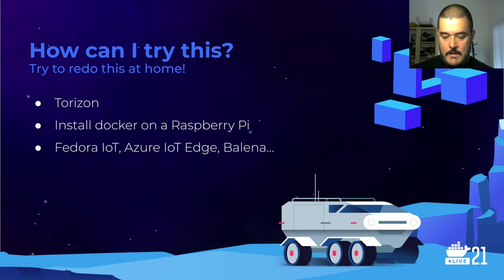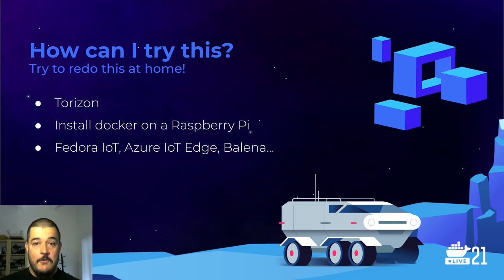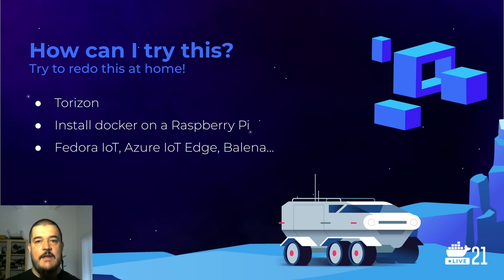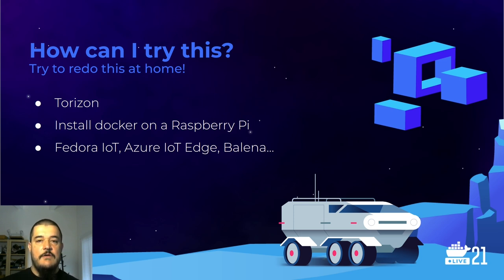I hope this session makes you curious and willing to experiment. For self-promotion: if you want to try on our hardware, you can use Torizon, the project I'm working on, which is designed to provide a small embedded OS to run containers. But you can also take a Raspberry Pi with the standard Raspbian distribution — it's quite easy to install Docker on it. There are also other solutions like Fedora IoT from Red Hat, Azure IoT Edge from Microsoft, or Balena, which provides a solution to run and update applications on embedded devices.